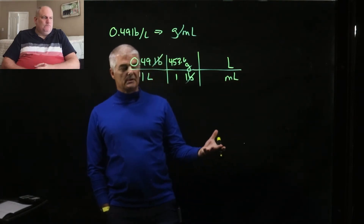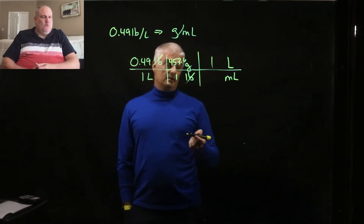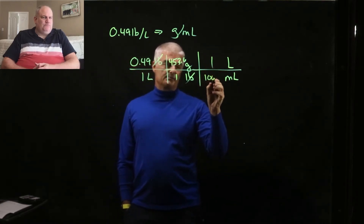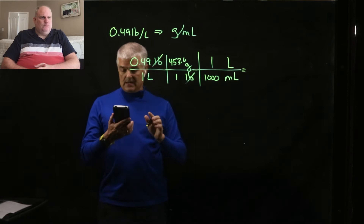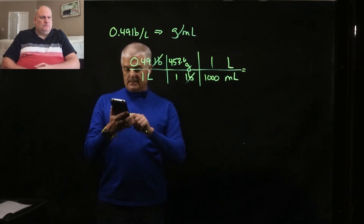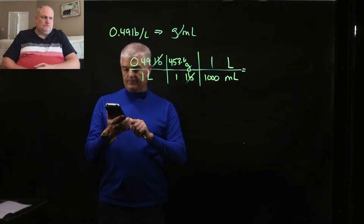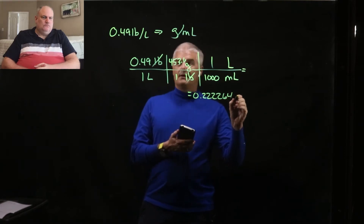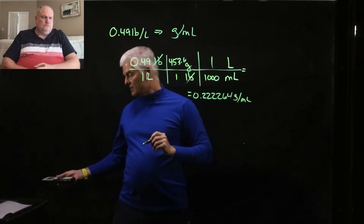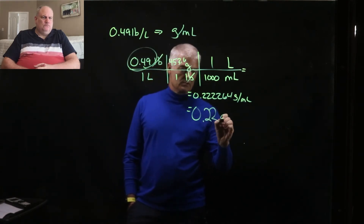Now I need to get from liters to milliliters. Liters is on the bottom, so cancel up — liters goes on the top and milliliters on the bottom. A liter is bigger, so he gets a one, and there are 1,000 milliliters in a liter. I calculate 0.49 times 453.6 divided by 1,000, and I get 0.222264. Rounded to two sig figs, that's 0.22 grams per milliliter.